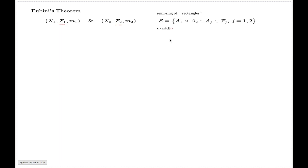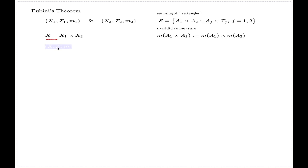On this semi-ring of rectangles I can construct a σ-additive measure. Given the semi-ring with the σ-additive measure, I can do the Lebesgue extension to the universal set X, and that will be the measure space which is normally called the product measure space — the product of the two original measure spaces X1 and X2.